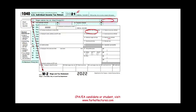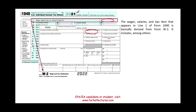Line 1 has generally been where wages and salaries appear for the past two to three decades. The wages, salaries, and tips item on Line 1 is derived from Form W-2, including total wages from Box 1. It also includes allocated tips from Box 8. If you work in a restaurant, casino, or any place where tips are a major source of income, the employer records what are called allocated tips.